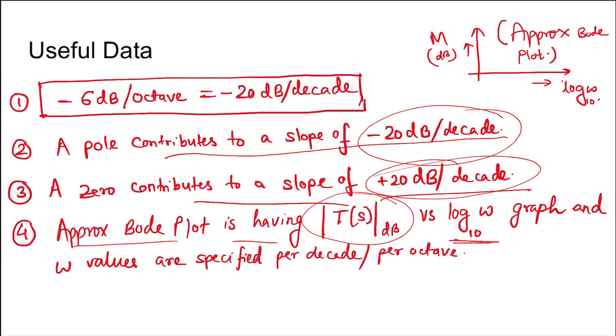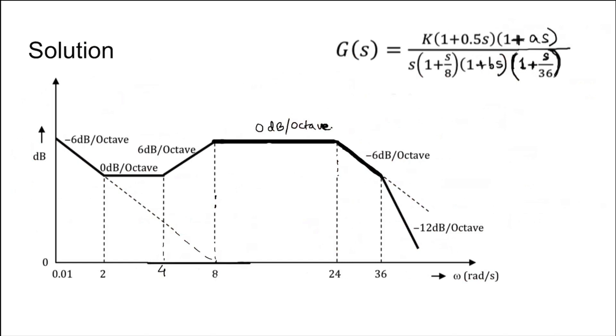Now coming to the solution, this approximate Bode plot is plotted with transfer function magnitude in dB. These are the omega values; however, the x-axis is log omega base 10. Since this is -6 dB per octave, it is -20 dB per decade. A slope of -20 dB per decade at the starting in decades means there is a pole at the origin, so the transfer function is k/s.